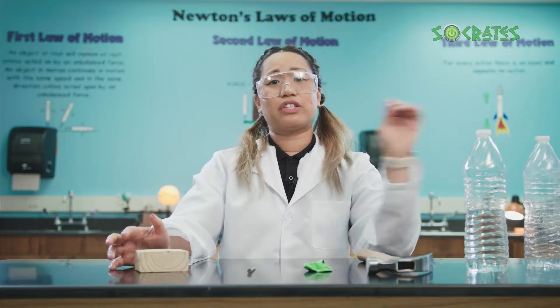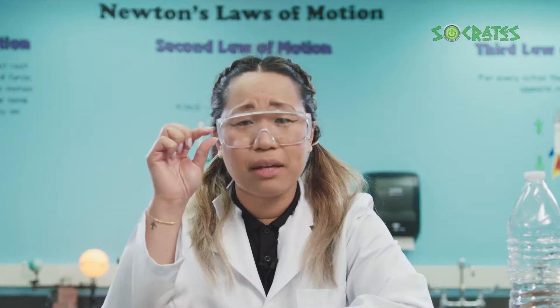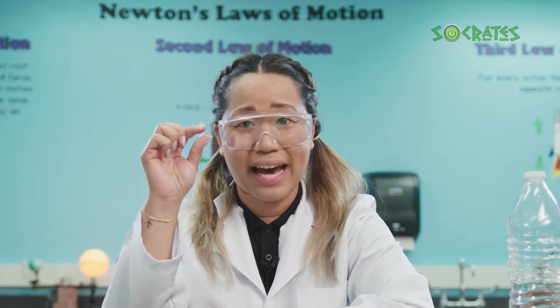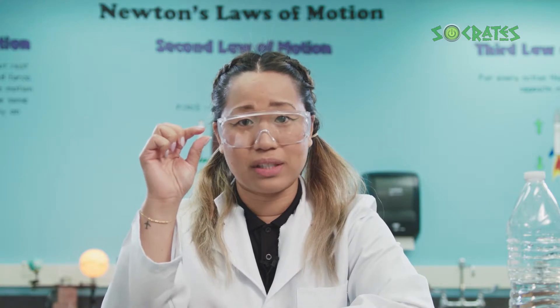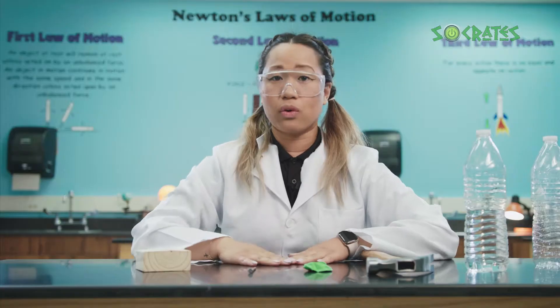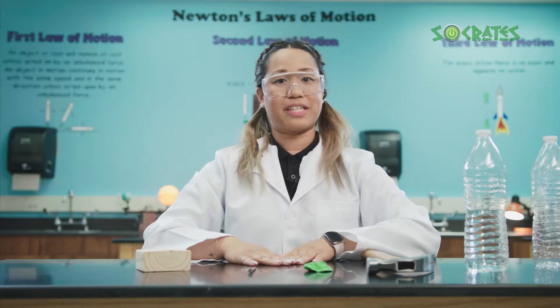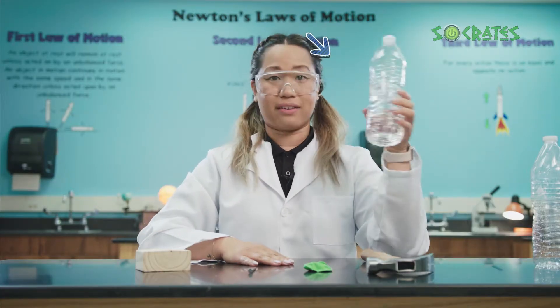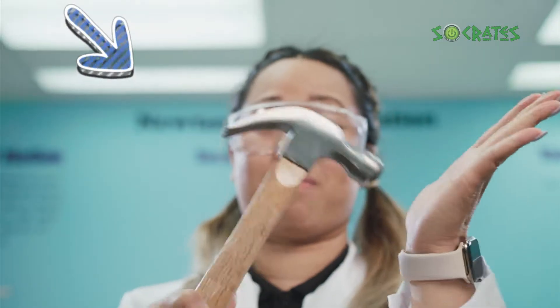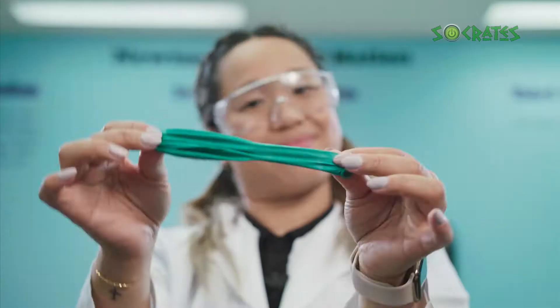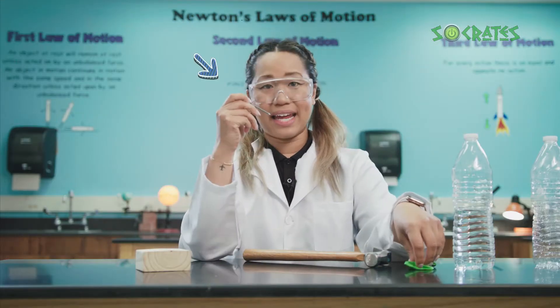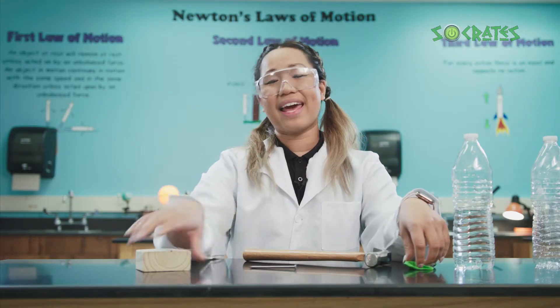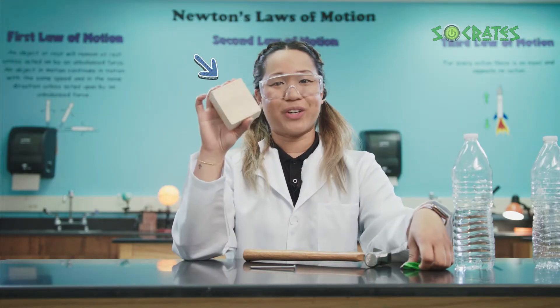All matter is made of extremely tiny particles called atoms and molecules. Atoms are so small that people can't see them with their eyes. In order for us to understand more about them today, we are going to be using a bottle, a hammer, a balloon, a nail, and a piece of wood.